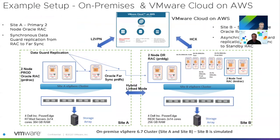Phase two is the design phase. An example three-site setup includes on-premises Site A running production workloads, Site B running dev/test/DR, and VMware Cloud on AWS in a six-node stretch cluster — three i3 servers across each of two availability zones. Site A connects via Layer 2 VPN to VMware Cloud on AWS; Site B connects via HCX. VMware Cloud on AWS introduces a vSAN capability with two logical datastores — one for management VMs, one for customer VMs.